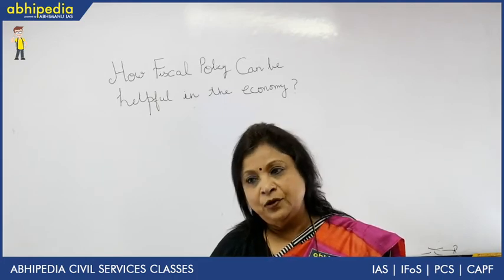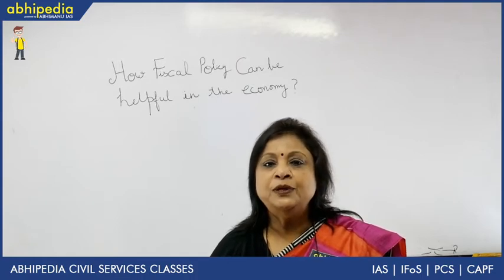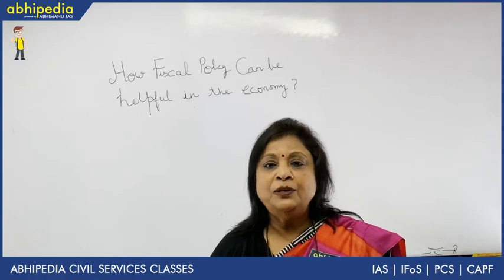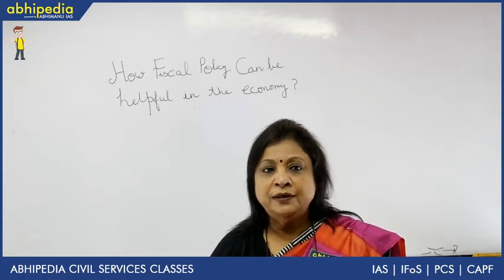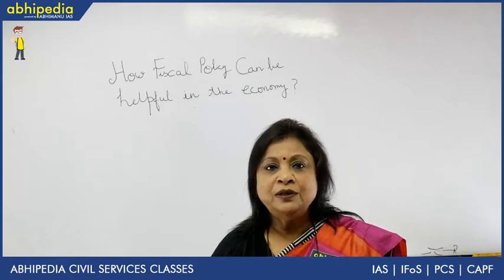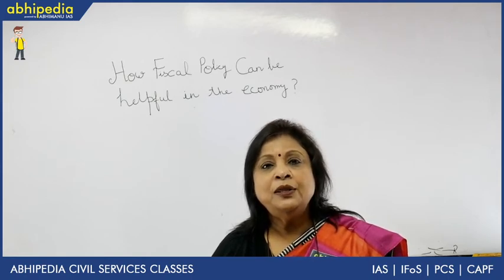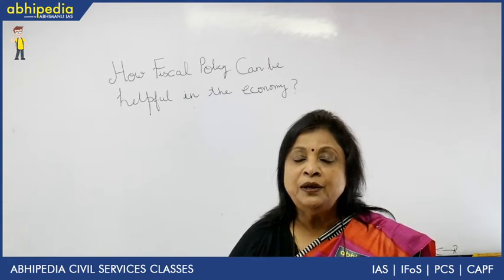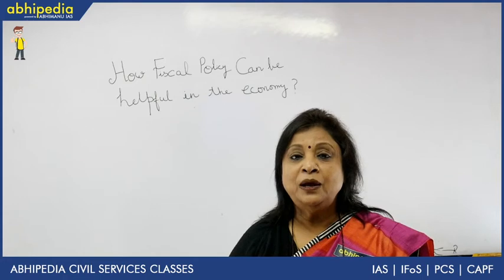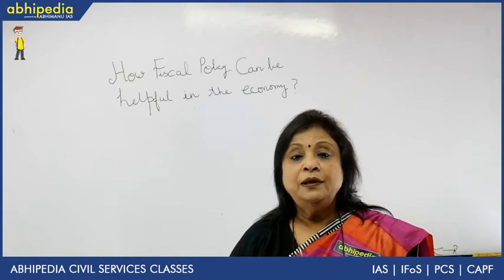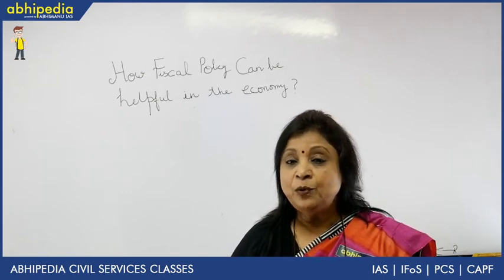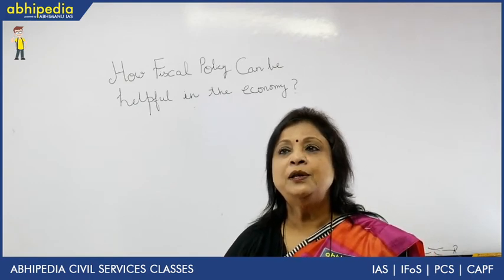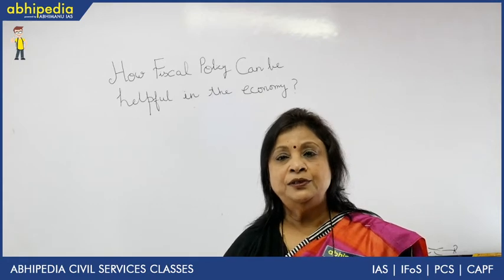Similarly, if there is recession or depression in the economy — because economies are subject to the business cycle, with recession, depression, recovery, and expansion or boom — the government, through the budget, increases public expenditure so that people are left with more money and more purchasing power. Taxes will also be reduced so that people have more purchasing power and aggregate demand increases, leading to price stability during deflation.